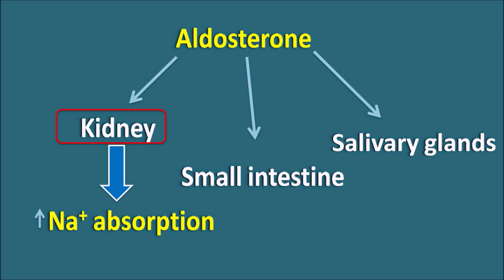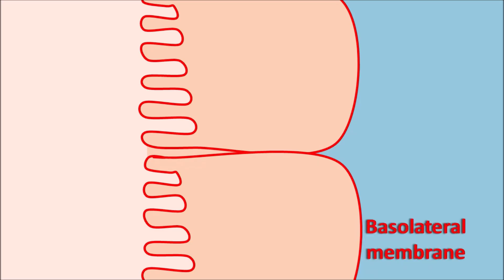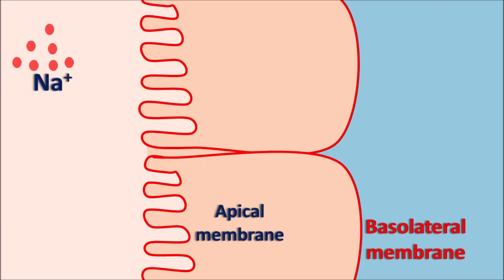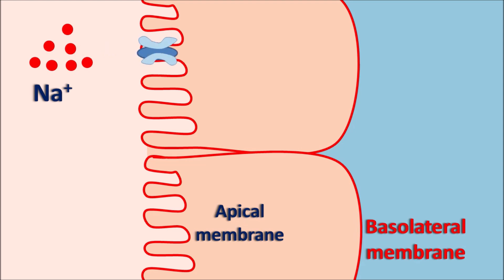Now let us see how this happens. Within the collecting tubules, the outside membrane is called the basolateral membrane and the inner membrane is the apical membrane. The sodium present in the filtrate can be reabsorbed into the systemic circulation through this apical membrane. In order to absorb the sodium, specialized sodium channels called renal tubular sodium channels are present on the apical membrane. Similarly, the apical membrane expresses another type of ion channels — potassium channels — through which potassium can enter into the lumen and be excreted.